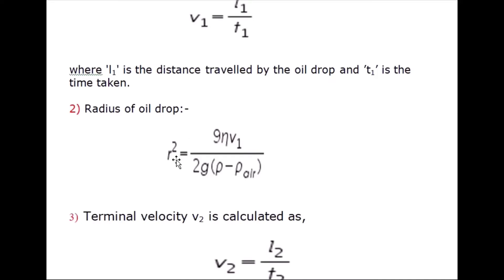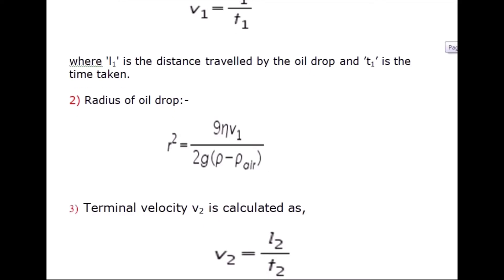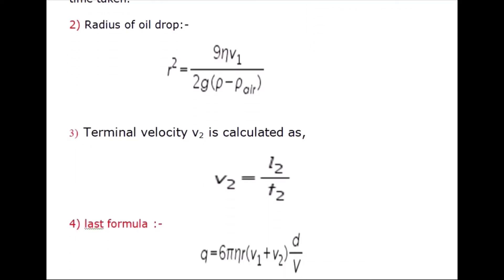Now we will calculate the radius of the oil drop. The formula for the radius of the oil drop involves 9, eta, and rho, where rho is for the oil drop density and rho air is for the air density. After this we will calculate the terminal velocity v2.